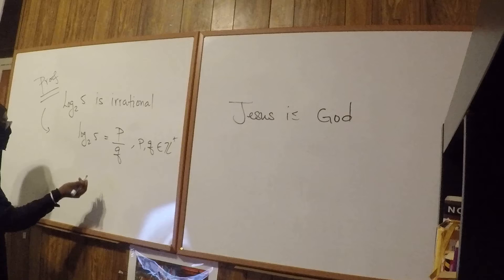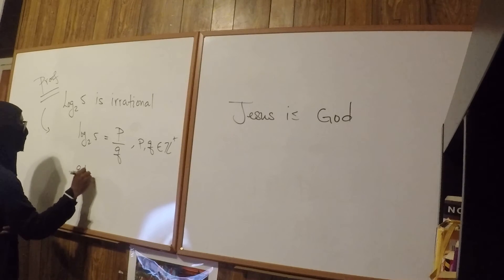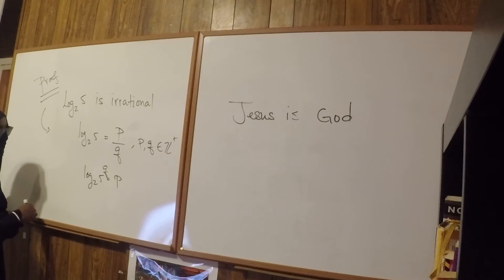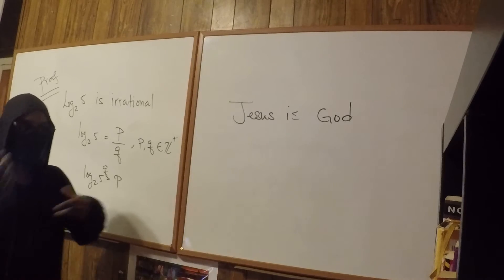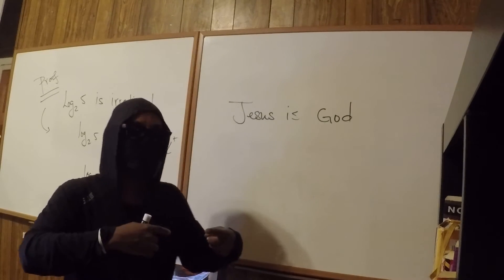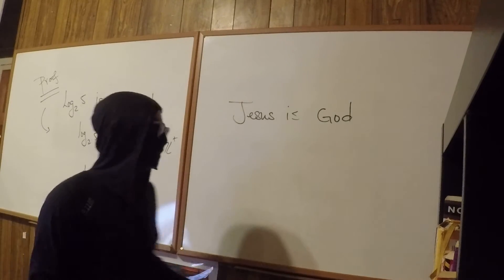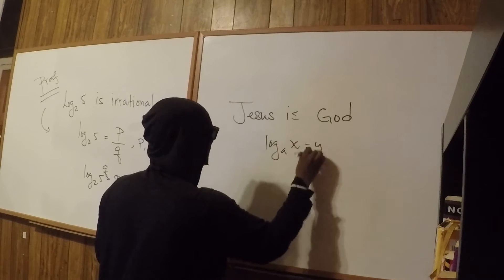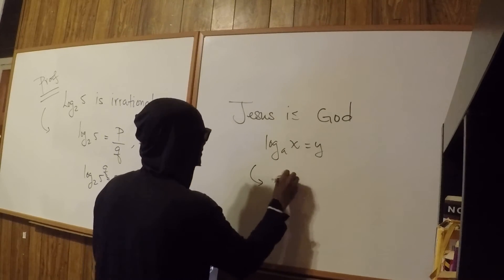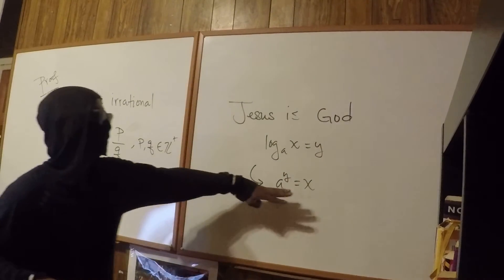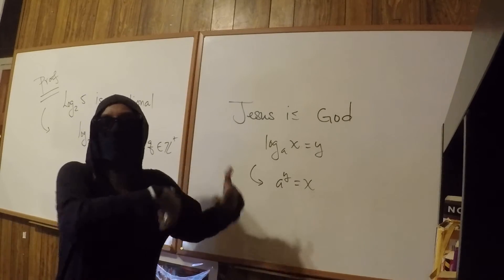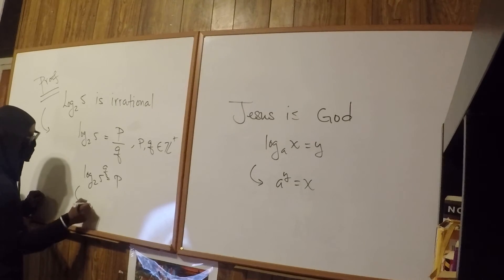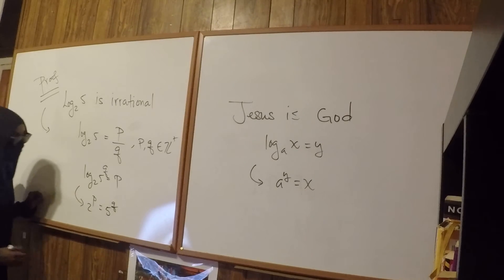Alright. So from here we can multiply by Q on both sides, and we get Q times log base 2 of 5 equals P. Then we can use the log power rule and put the Q on the 5. Remember, the way we deal with logs is by the exponential translation — log base A of x equals y is exactly the same as saying A to the y equals x. This is called the exponential form, and this is called the logarithmic form. So using that translation, we can write this as 2 to the P equals 5 to the Q in its exponential form.